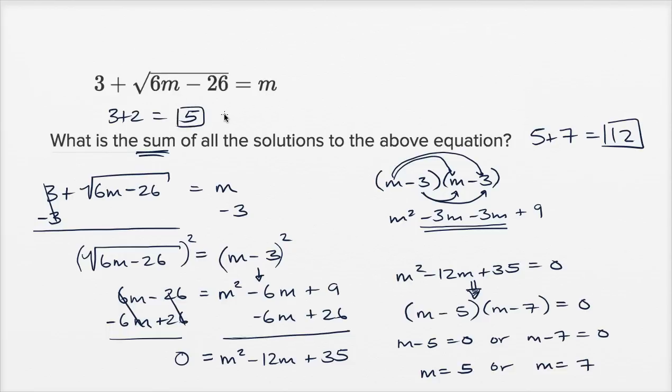And if m was seven, this is going to be three plus the square root of 42 minus 26 is 16. And this needs to be equal to seven. Well, the principal root of 16 is four. And three plus four is indeed equal to seven.